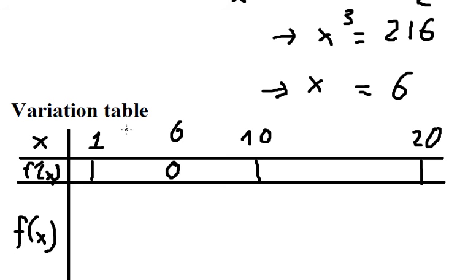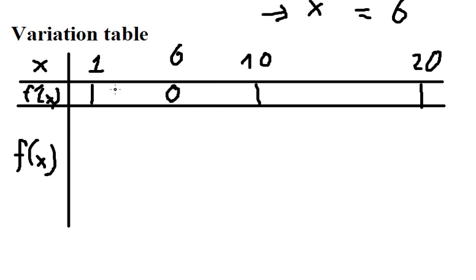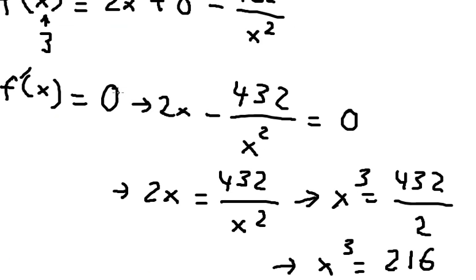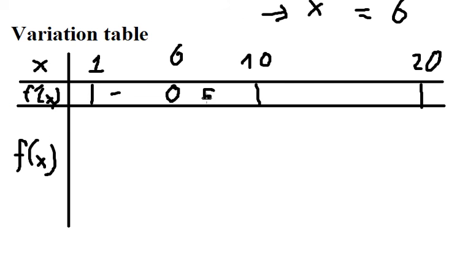Now we need to find the sign of the first derivative on each sub-interval. I'll select a number between 1 and 6 — I'll choose x equals 3. Substituting x equals 3 into the first derivative gives approximately negative 42, so the sign from 1 to 6 is negative. Next, I select x equals 7, between 6 and 10, and substituting gives approximately positive 5.1, so the sign from 6 to 10 is positive.